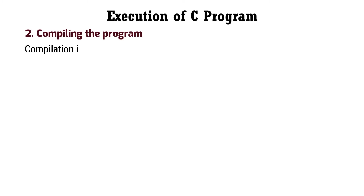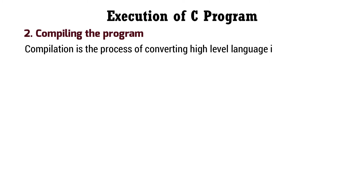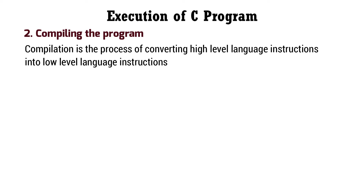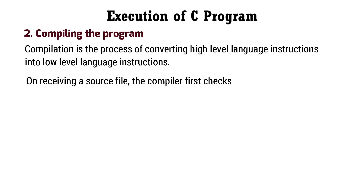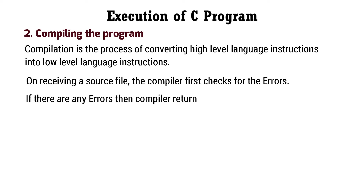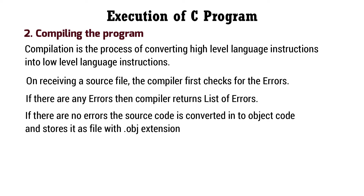Now coming to compiling the program. Compilation is the process of converting high level language instructions into low level language instructions. On receiving a source file, the compiler first checks for errors. If there are any errors, the compiler returns a list of errors. If there are no errors, the source code is converted into object code and stored as a file with the .obj extension.